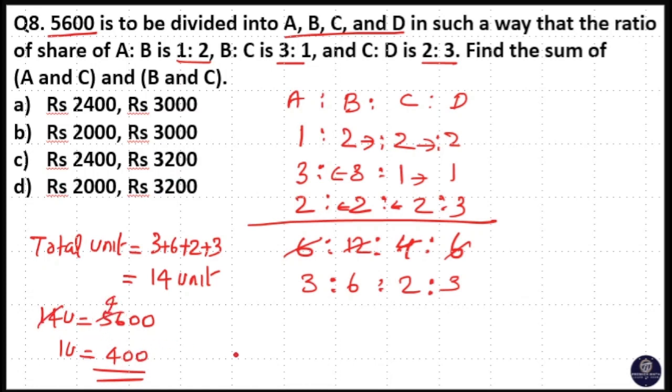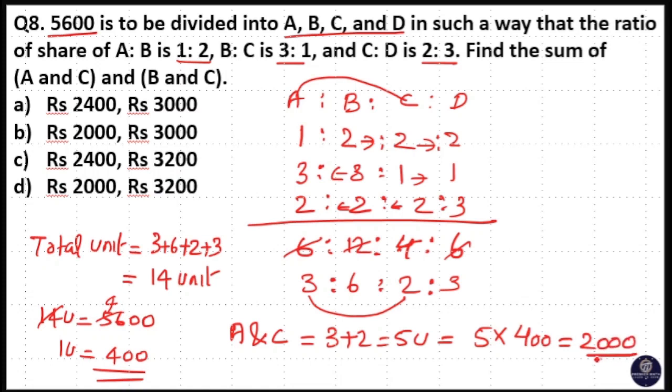One unit is 400. So they are asking for A and C. A and C equals 3+2 = 5 units = 5×400 = 2000 rupees.